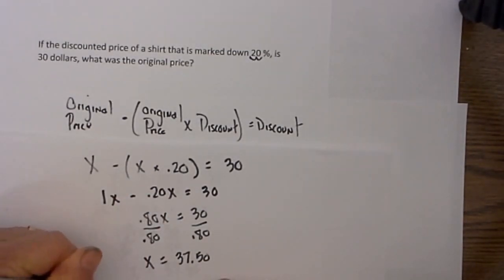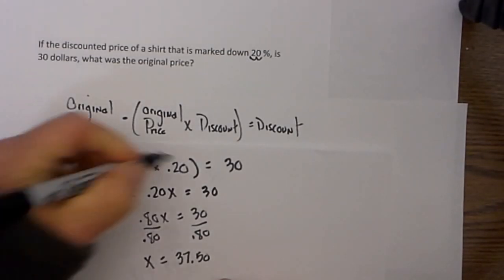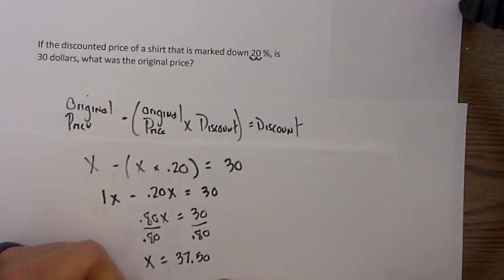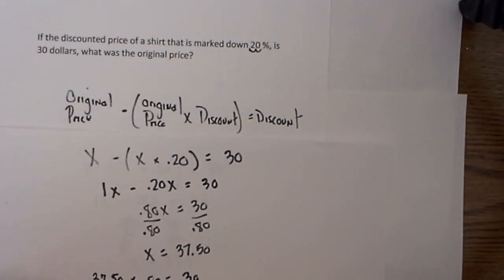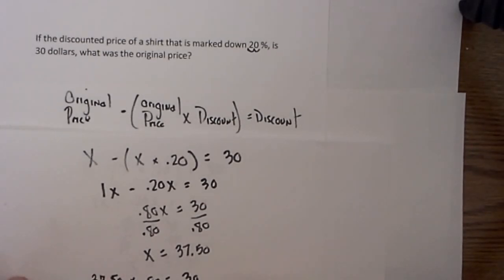I can check this because, remember our shortcut, 20%, I can just multiply it by .80 and that should equal 30. And if you get your calculator out, you can see that 37.50 times .80 is $30.